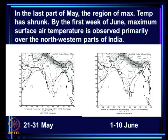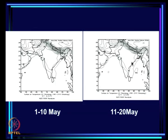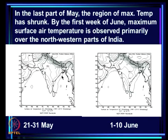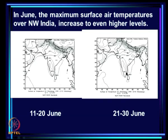In the last part of May the region of maximum temperature actually shrinks. It was rather large from 11 to 20th May, but we start getting thundershowers towards the second part of May. With thundershowers this part has cooled, so the region of maximum temperature has shrunk, and by 1st to 10th June it has shrunk even further — receding northward. In June, maximum surface air temperatures over northwest India increase to even higher levels, while the rest gets cooler.